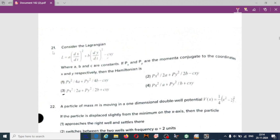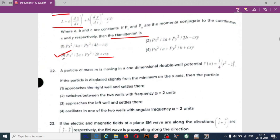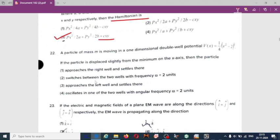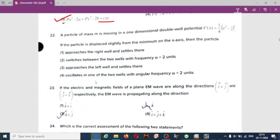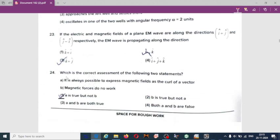This question also has been asked in the CASSETTE exam yesterday and also for this Rajur University exam. Here you should find out the Hamiltonian of the given Lagrangian. The Hamiltonian of the given Lagrangian, if you solve, you will get option 3: px squared by 2a plus py squared by 2b plus cx.